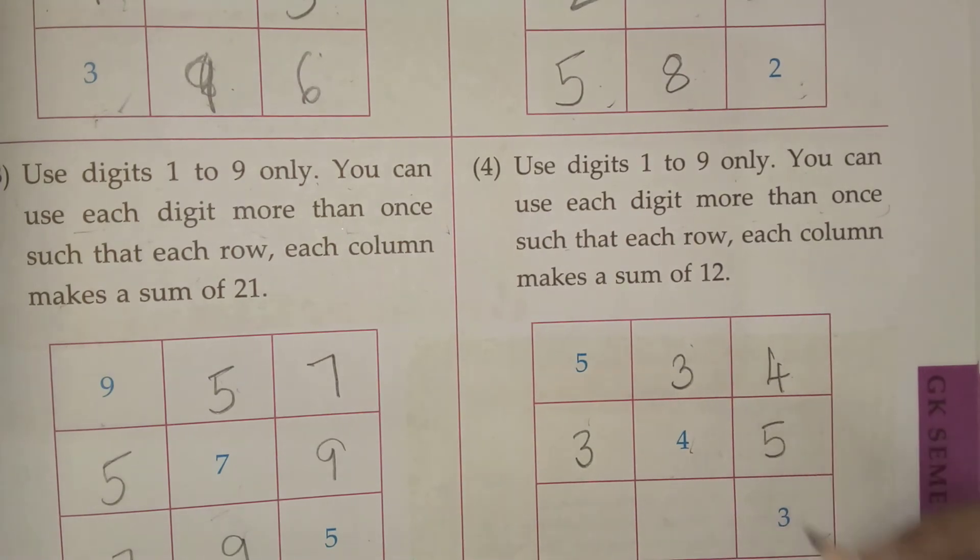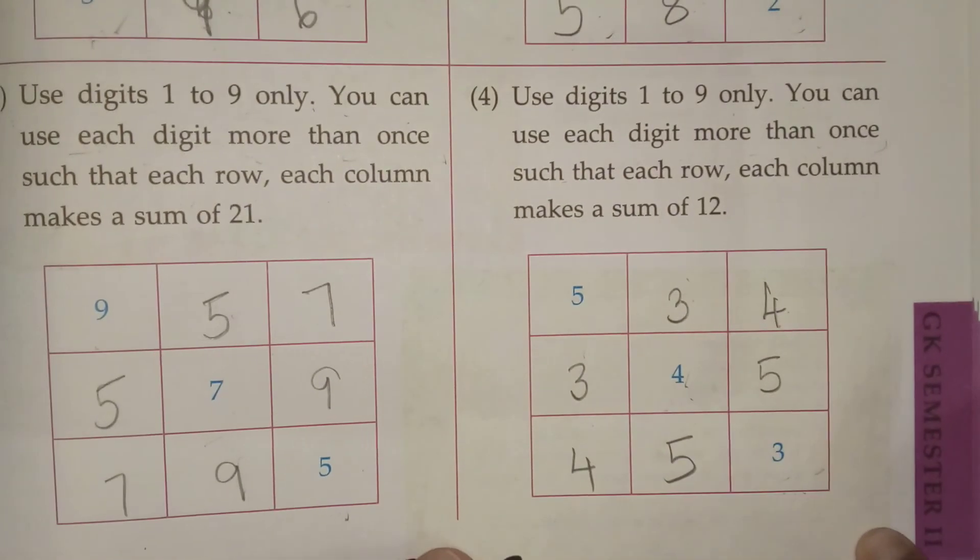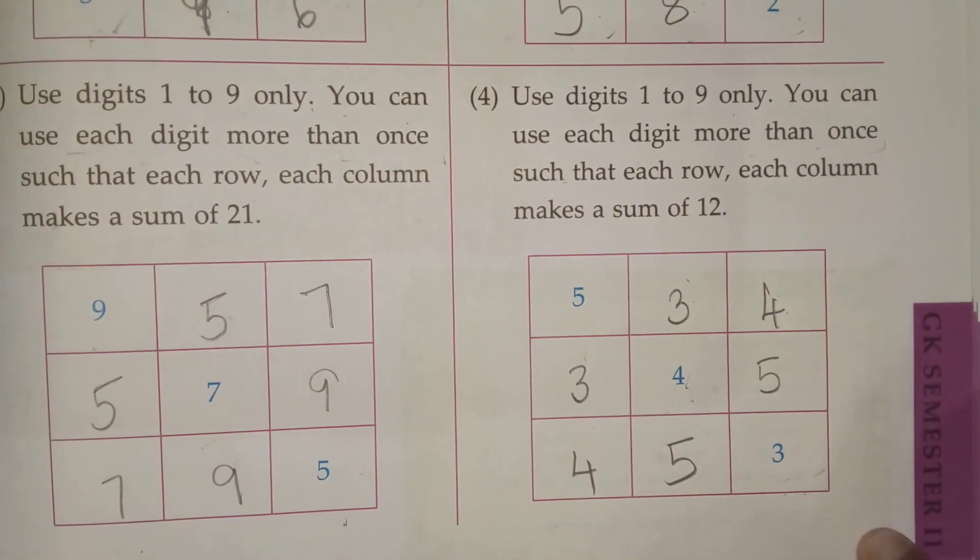Next. Here 4 is there. Here 3, 5. Because here 3 is there. So next. Here 3. Here 3, 4 is there. 5. Here 5, 3 is there. 4. By that we done our magic squares.